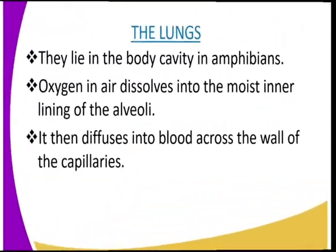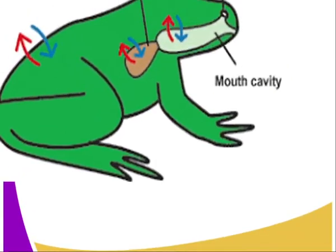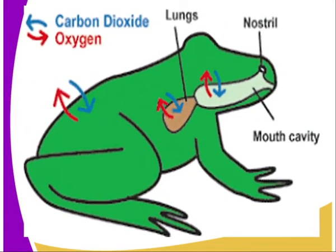Now we can look at this diagrammatic presentation of the frog and discuss gaseous exchange through the lungs. The lungs lie in the body cavity of amphibians. When the nostrils are closed, air can be forced into the lungs by the pumping action of the floor of the mouth — the buccal cavity. The air reaches the alveoli of the lungs, which are well supplied with blood.